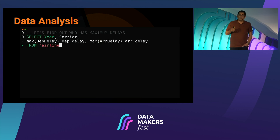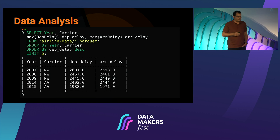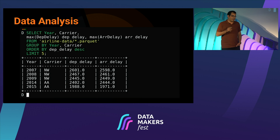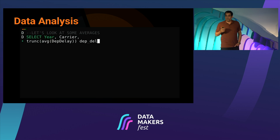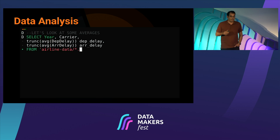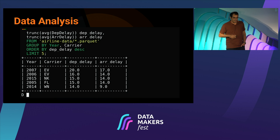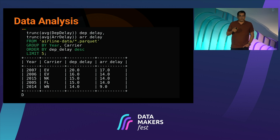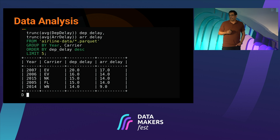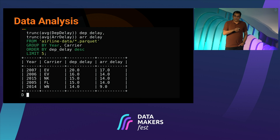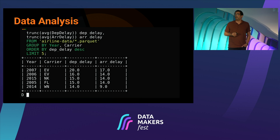Let's find out who has the maximum delays. Northwestern — and afterwards American Airlines — had the maximum delays. And let's try some more computation, some averages — who over the years had on average the most delays. Here we can see EV. I forgot the name of this airline but they're out of business. This might explain why. By the way, this is in real time — no speeding up or anything. This is how fast it runs on four gigabytes of data.